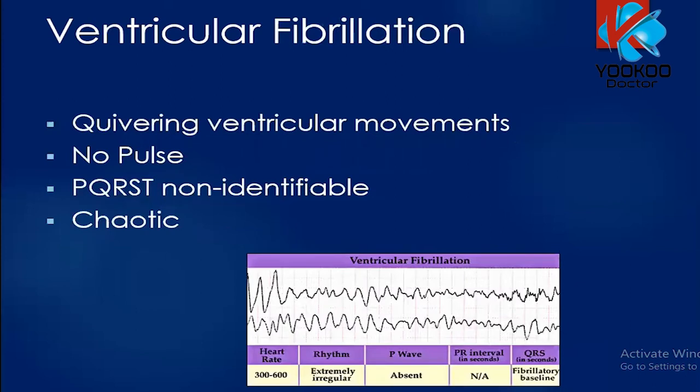In ventricular fibrillation, you see fibrillatory waves similar to those in atrial fibrillation, but these are critical patients in whom you cannot feel a pulse. The waves are not identifiable — it is chaotic, showing just zigzags or fibrillatory waves. This is different from atrial fibrillation, where fibrillatory waves are present but the QRS complexes are still visible. In ventricular fibrillation everything is fibrillatory waves and the patient is in critical condition.